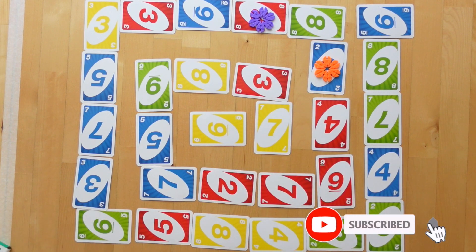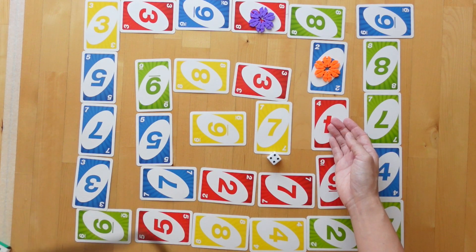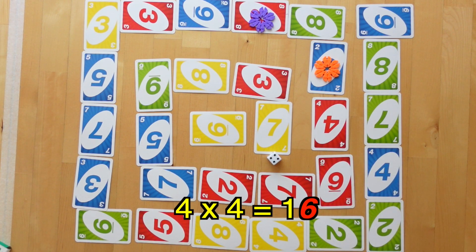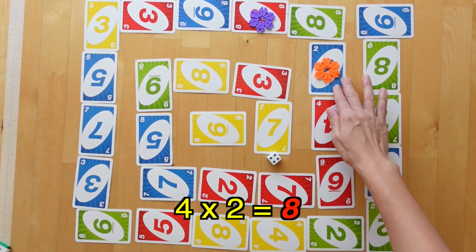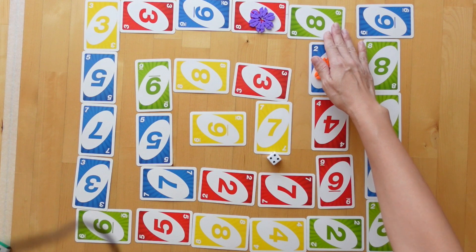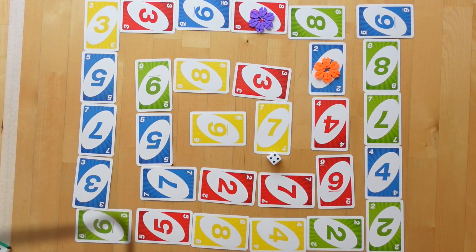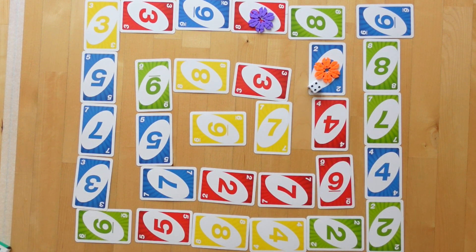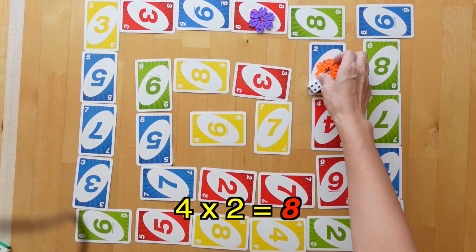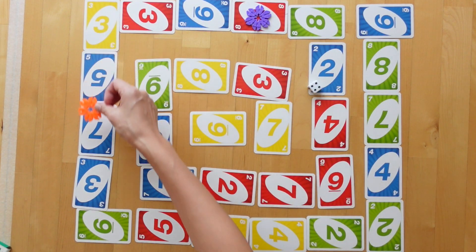Now let's go back to the orange player. Orange player has rolled a 4. She can do 4 times 4, which is 16, and move 6 spaces. She can do 4 times 2, which is 8, and move 8 spaces. Or she can do 4 times 8, which is 32, and move 2 spaces. So she's going to try and outrun 2. 4 times 2 is 8, and she moves 8 spaces. 1, 2, 3, 4, 5, 6, 7, 8.